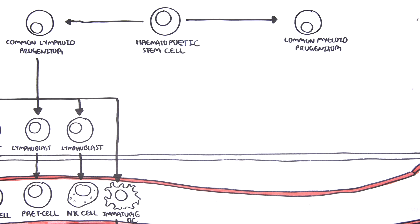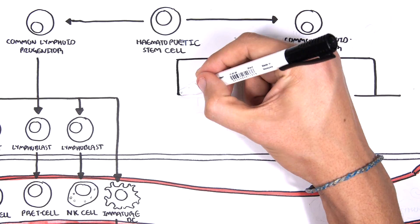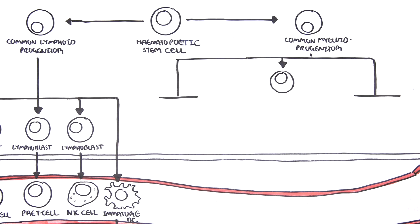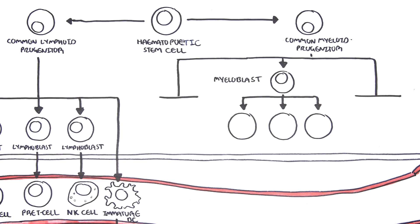That was the lymphoid progenitor cell lineage. Now let's look at the common myeloid progenitor cell lineage. It's important to know that the outcome of this lineage are cells that can circulate in the blood — hence hematopoietic. From the hematopoietic stem cell, it can become a common myeloid progenitor cell. The common myeloid progenitor cell can become myeloblasts and eventually become granulocytes — cells containing granules.